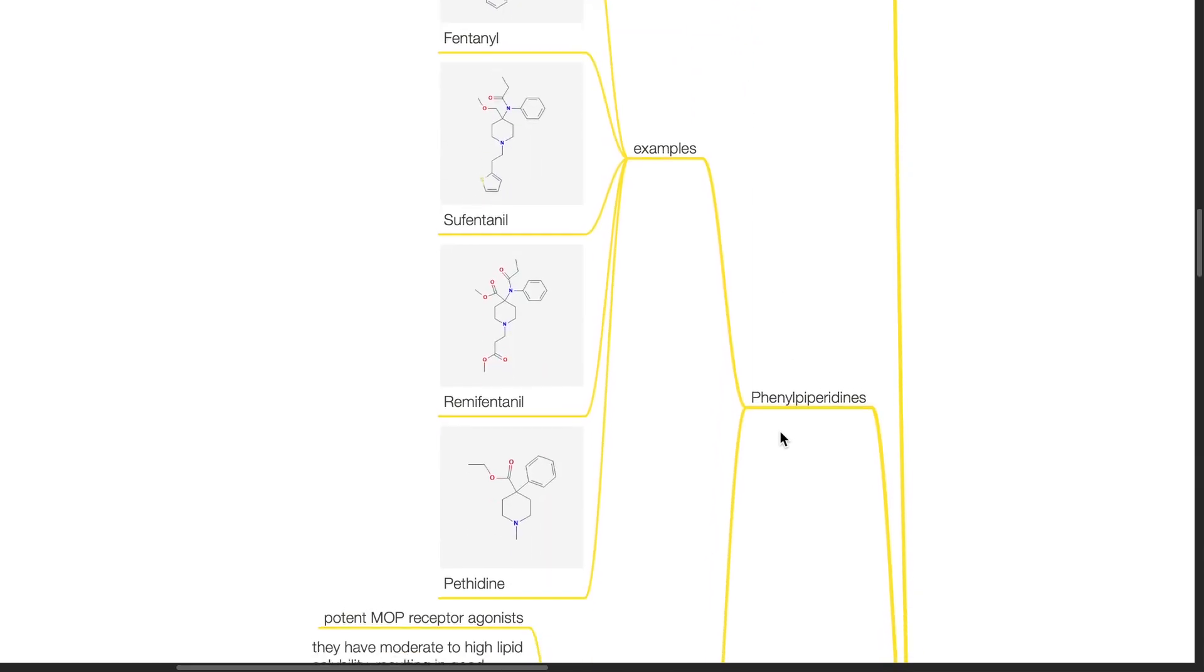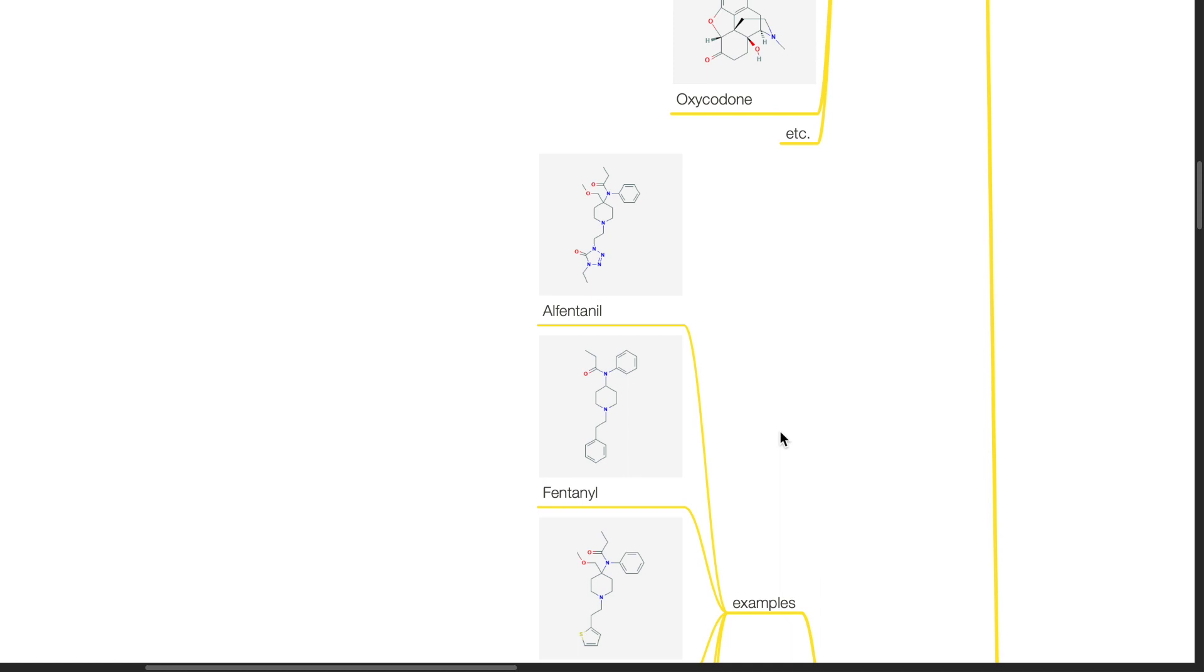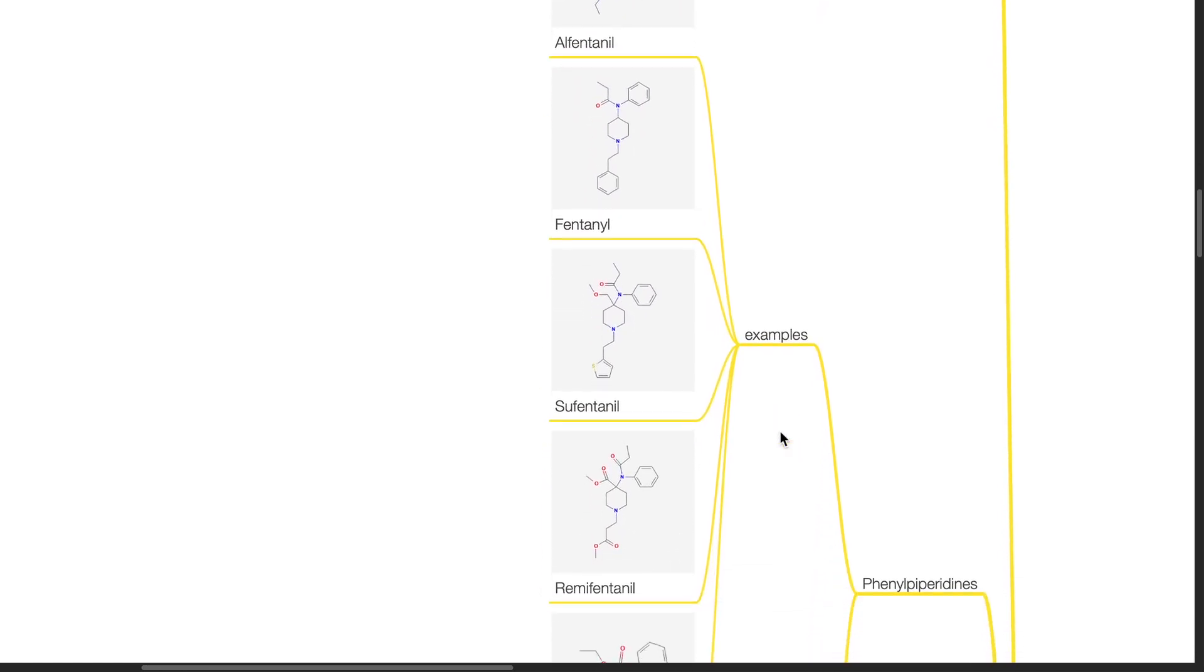Examples of phenylpiperidine includes alfentanil, fentanyl, sufentanil, remifentanil and pethidine.